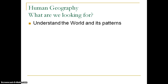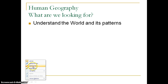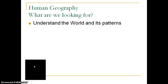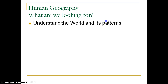When we talk about human geography, the first thing we want to look at is what exactly we're looking for in the course and as we begin to develop a geographic perspective. One of the things we're looking to do is understand the world and its patterns. Really, maybe the most important part of this would be this idea of patterns. What exactly is going on in the world? Do we see patterns developing? Are things coincidental or is there an actual relationship there?